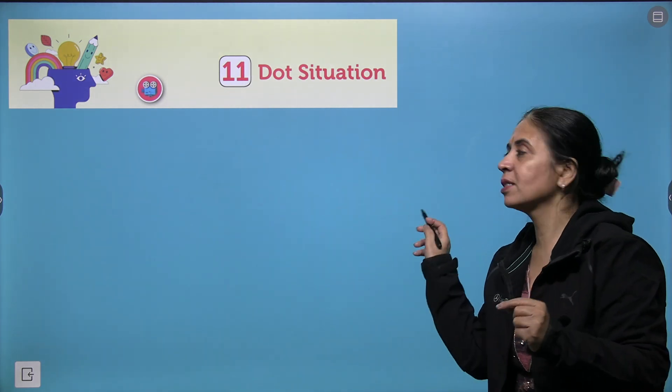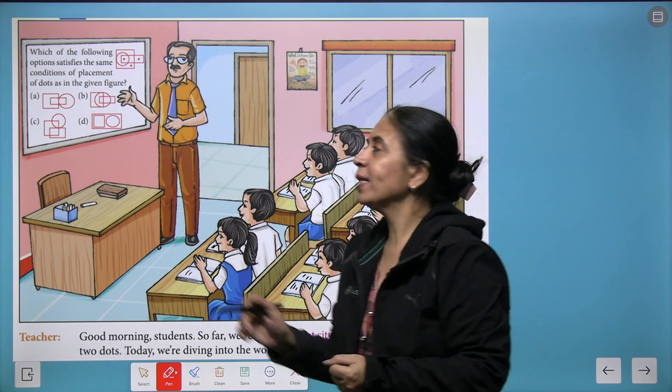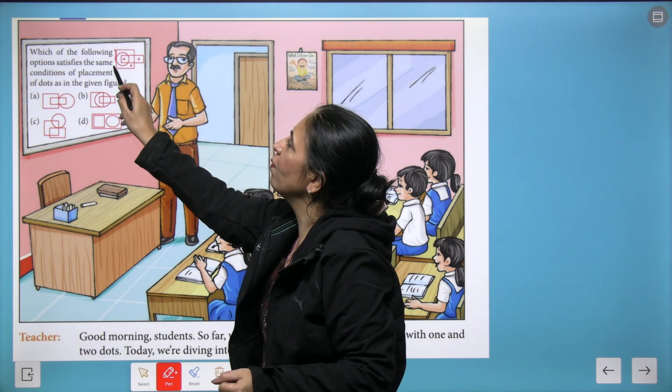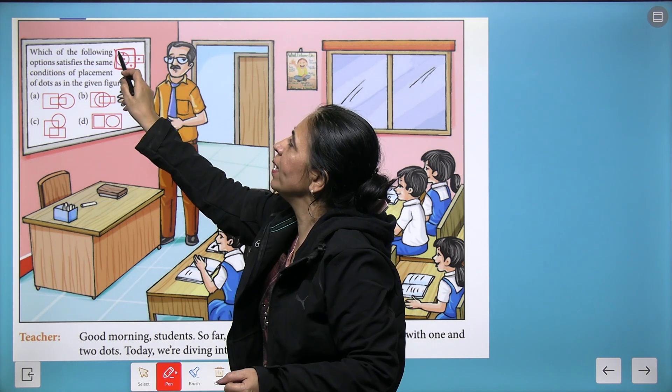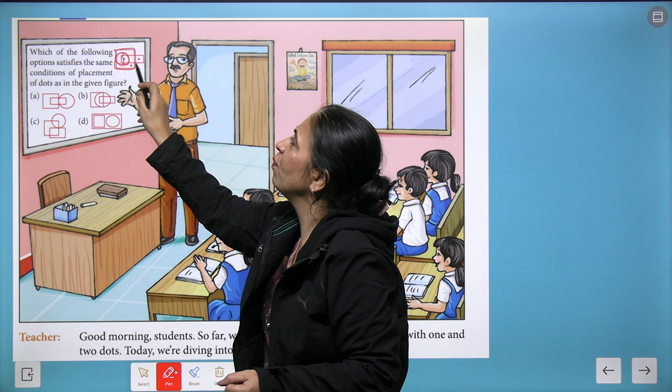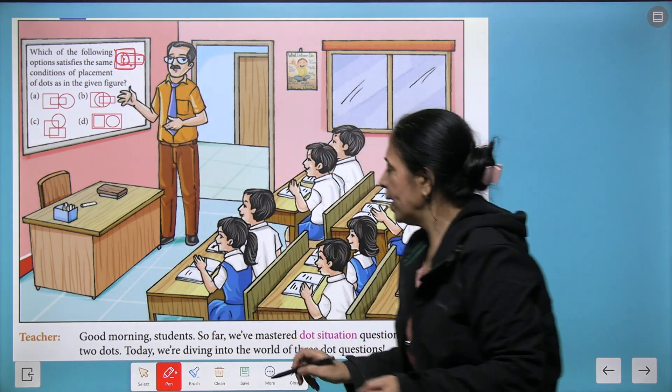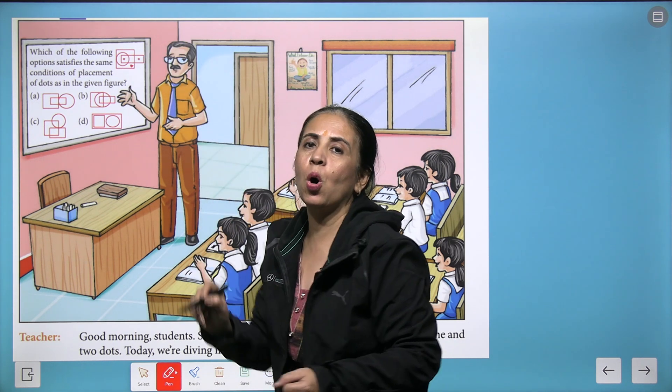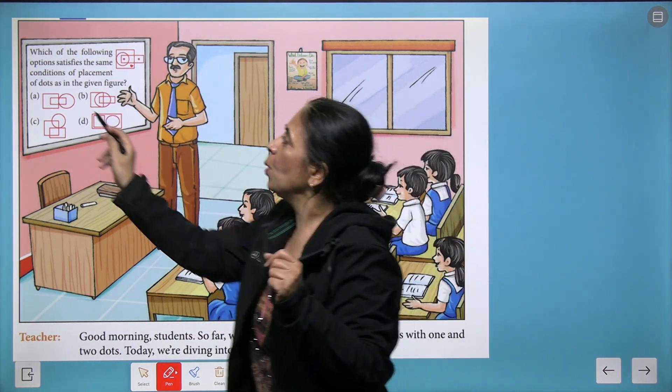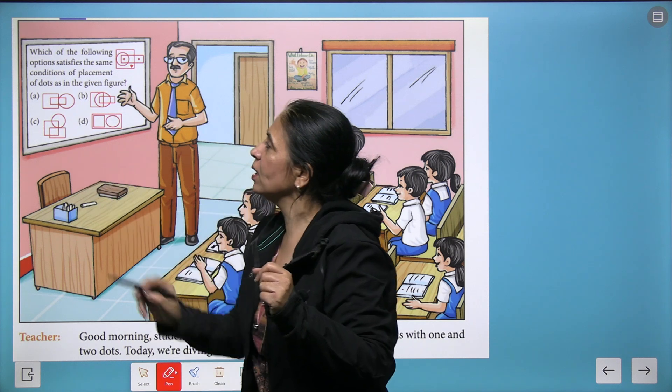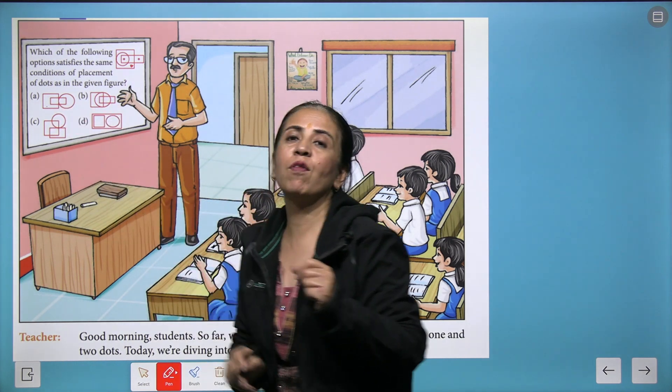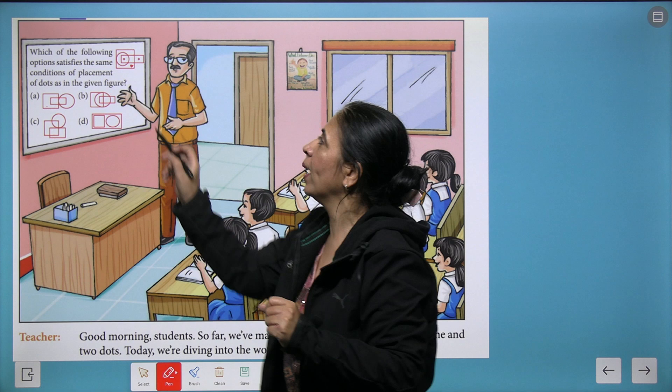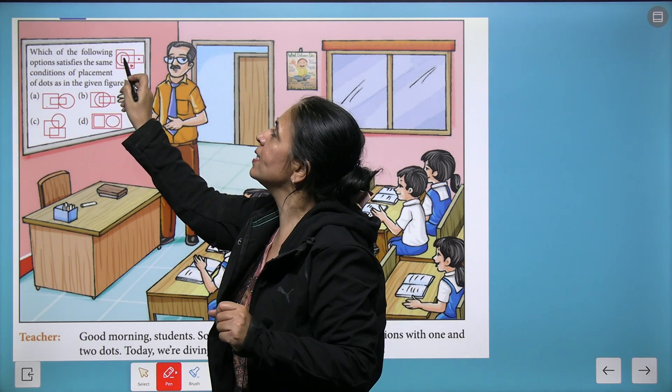Let's see the question. Over here we have a square, one circle, and one rectangle. We need to see that we have one dot in a square. Looking from these options, the first option can have one dot in only the square. Then we come to the second dot.